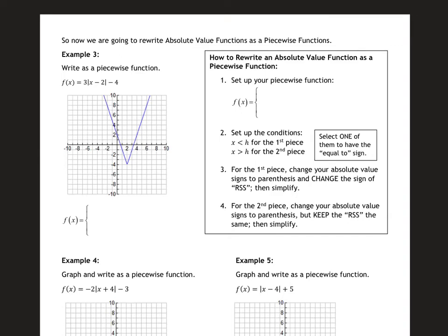We just finished writing absolute value equations and how to graph them, so now we're going to learn how to take these absolute value V's and write them as a piecewise function. We're going to set up our piecewise function with a nice box and set up the two conditions: x is less than h, and x is greater than h. You can select one of them to have the equal-to sign — it doesn't matter.